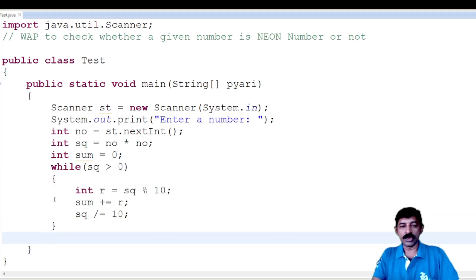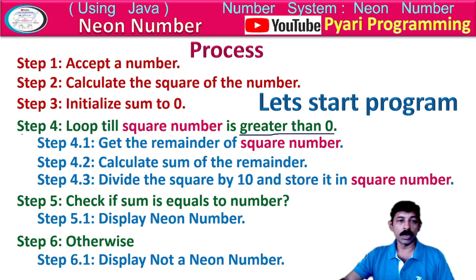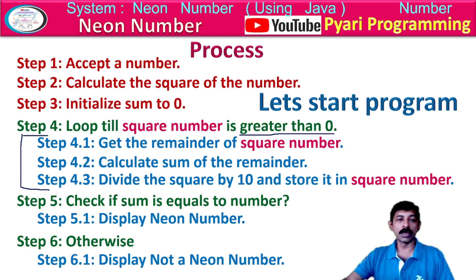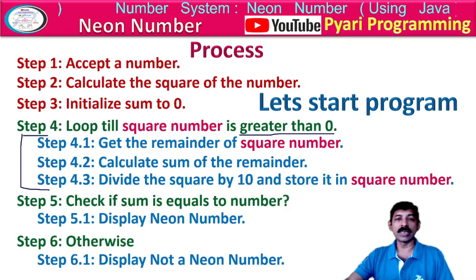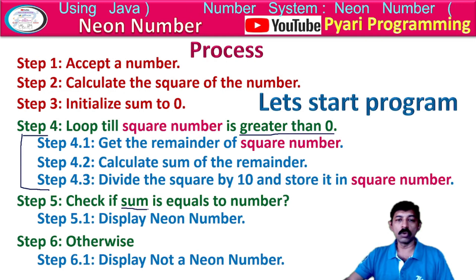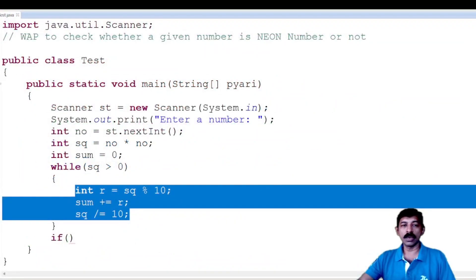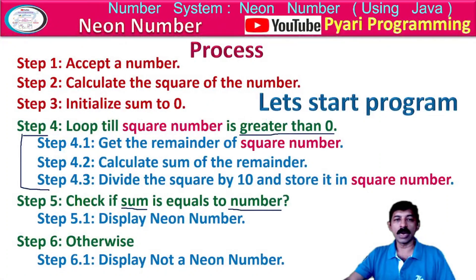Now after coming out of the loop, I will check. The most important part — too many times I have told you what to do. The three steps inside the loop are: get remainder, calculate sum, reduce by dividing. Now when I come out of the loop, I check: if my number stored in variable 'no' equals my sum. Not the square — where I stored the square of the number. That's why I check: if no == sum.